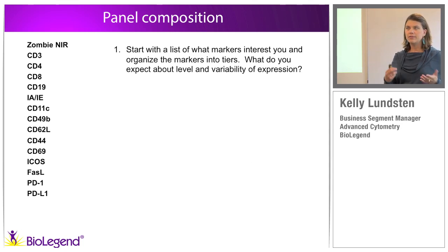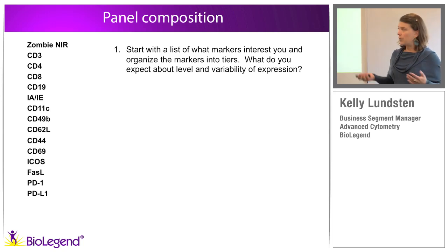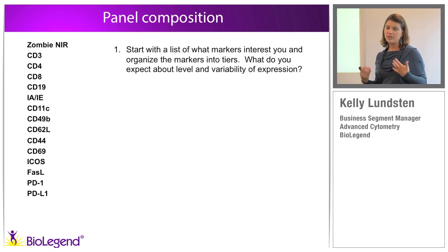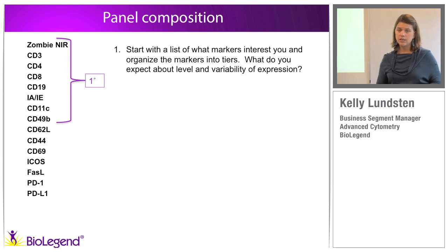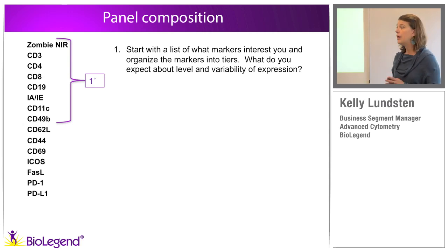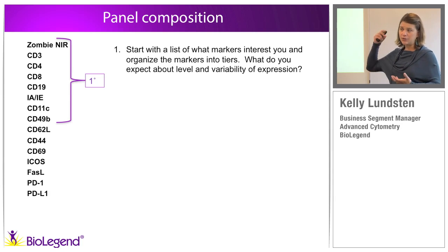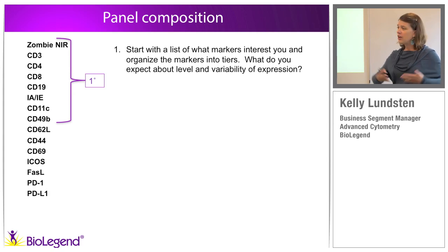Here's a full list of markers from the literature implicated in this process. When you have a list of markers, the first thing you do is organize how well you understand their expression and what to expect. For basic phenotypic markers — your primary tier — these are anything that tends to be discretely resolved at a relatively consistent known percentage within a given population, like a spleen. They're not always extremely abundant, but they resolve into a clear population.